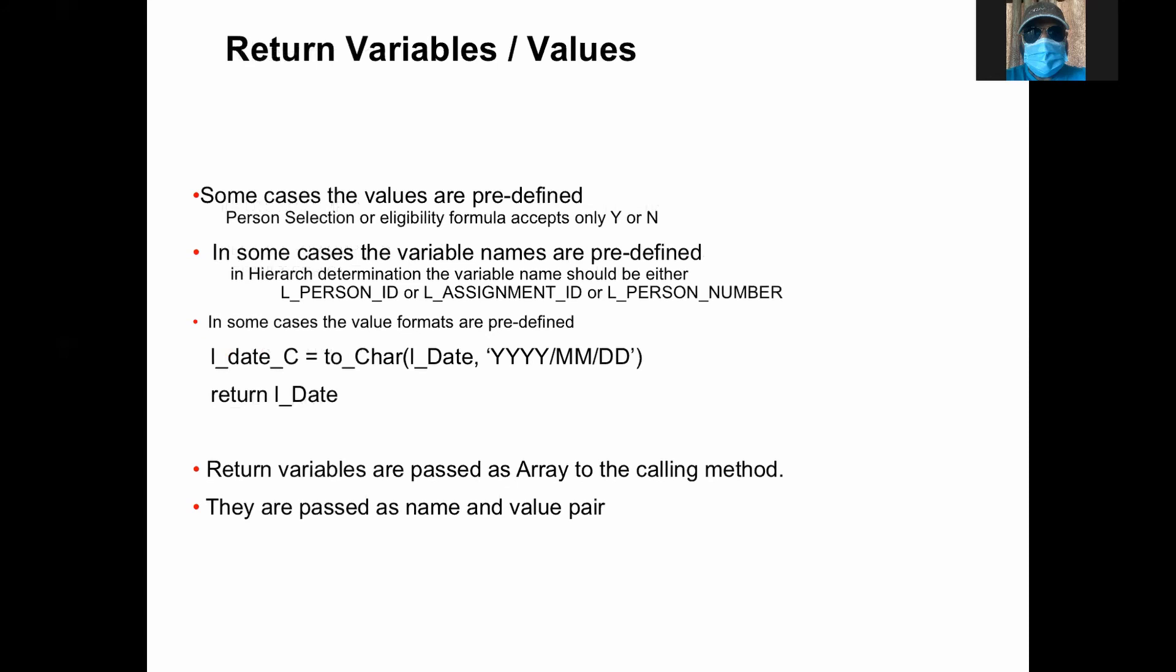Now what we see is the return variable. Return variable is what you are passing back to the application. These are kind of predefined. In some cases like system extract, you don't pass it. You call a method that will write into the database tables. Other than that, every fast formula you return something. So basically, the return variable or values are expected in a certain manner or certain values expected. If it is a kind of eligibility or you are telling the person is valid or not, you are going to say yes or no. Most of the time it's Y or N.